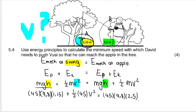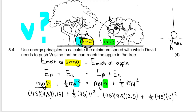Now, when Vusi reaches the apple, this is at the maximum height of the swing. Imagine sitting on a swing and swinging up — at the maximum point you technically stop for a second. At the maximum height the velocity is zero, just like a pendulum: at the bottom of the swing velocity is maximum and height is zero, while at the top velocity is zero and height is maximum. So the velocity at the apple is zero.